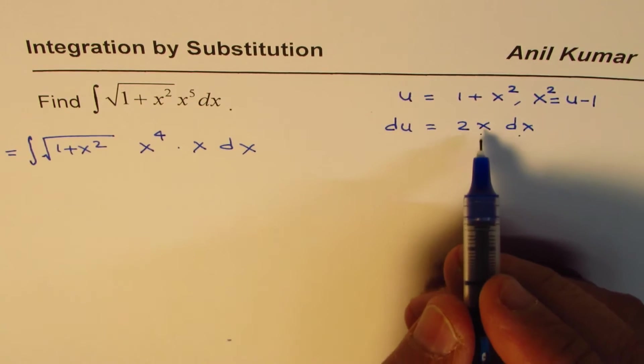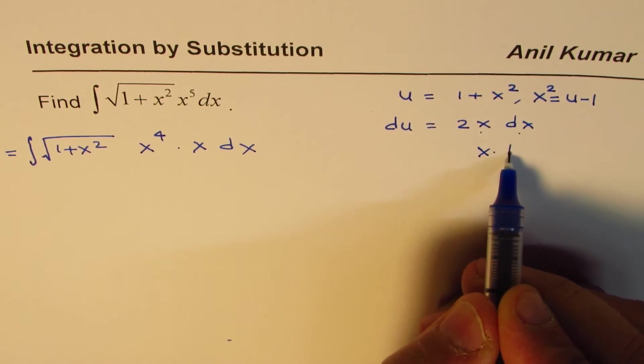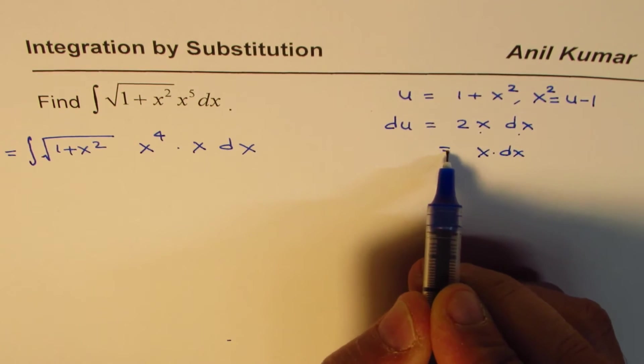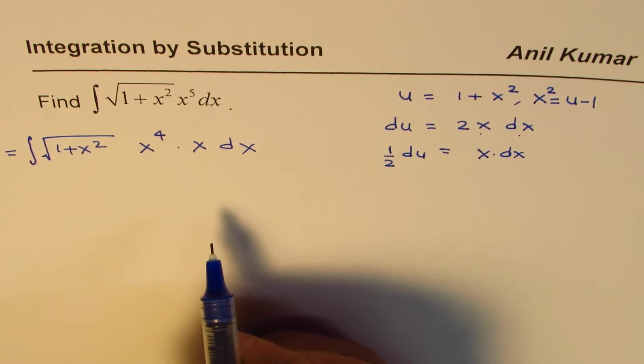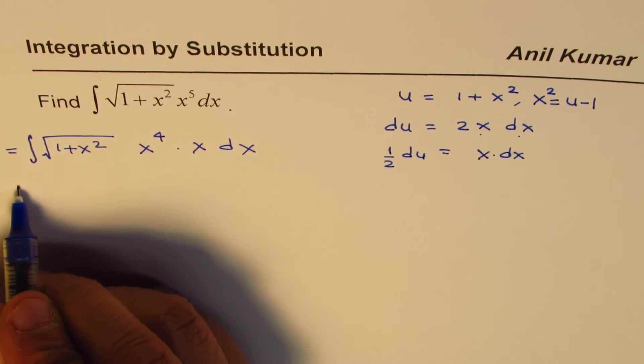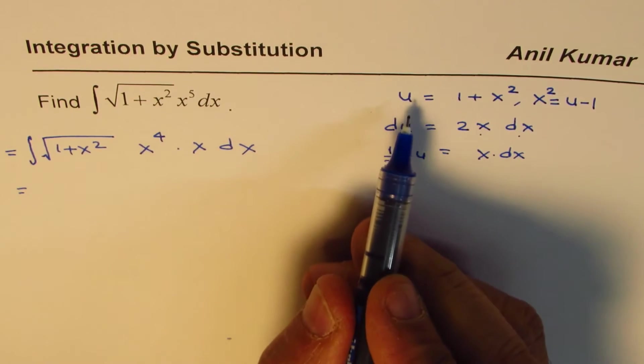As soon as I write like this, things become clear. We could now say that x dx equals half of du. Now we can replace and substitute with the variable u.